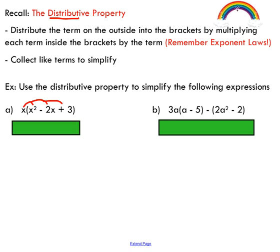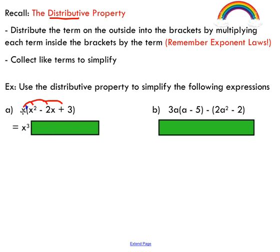There's a little rainbow here because if you draw these lines out to remind yourself that you're distributing this term to each term inside the brackets, they kind of look like rainbows. I still do this — it's a good habit to get into just to visualize what's happening. We're going to do x times x². Recalling your exponent laws, this x has an exponent of 1, and when I multiply two powers with the same base, I add my exponents. So my first term should be x³.